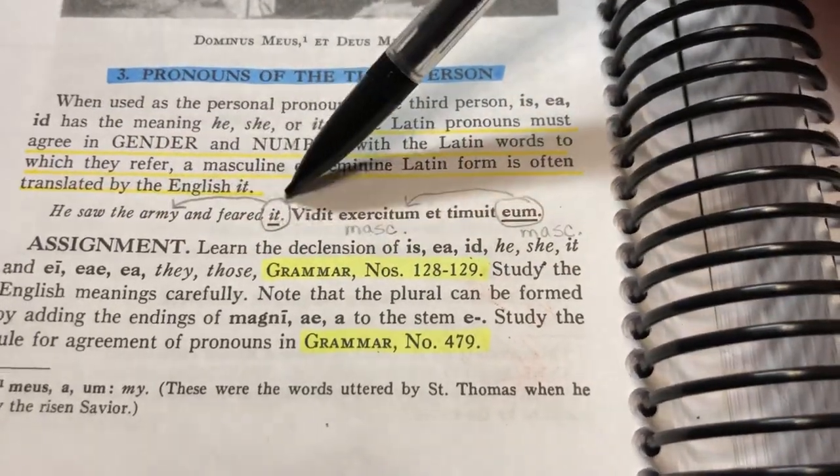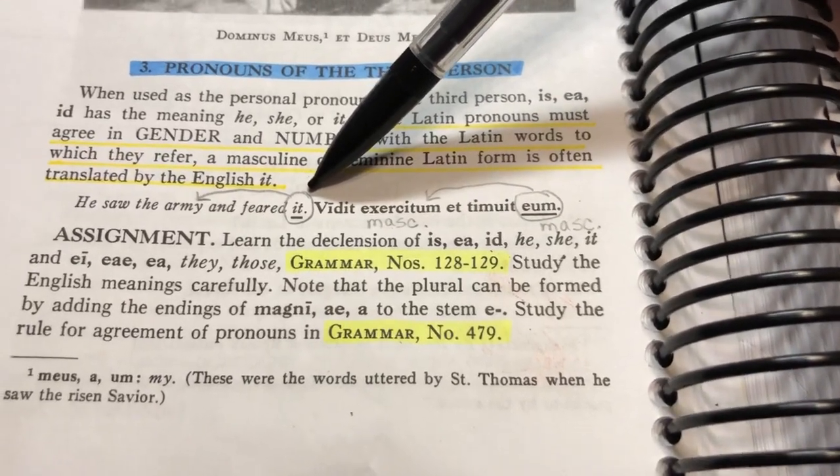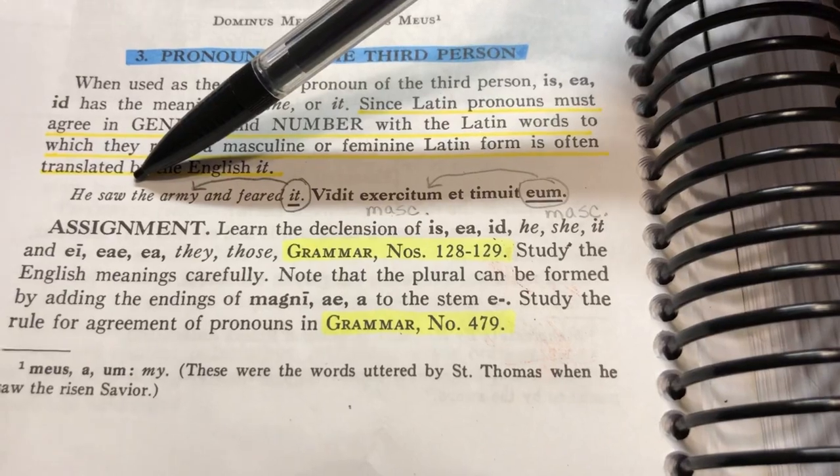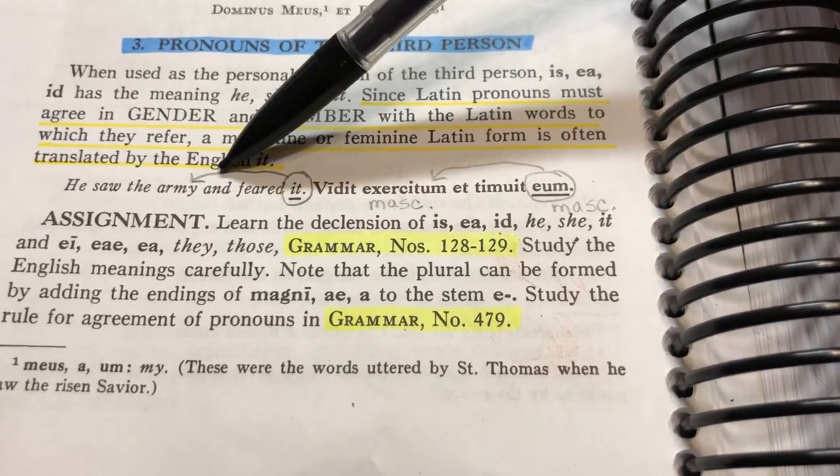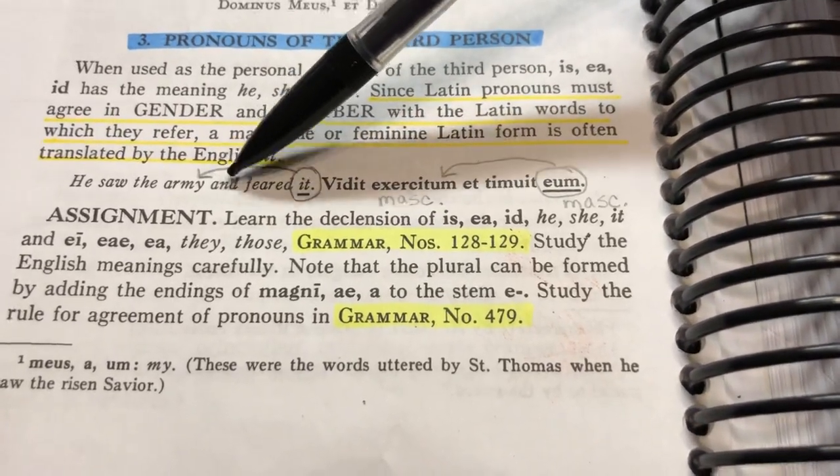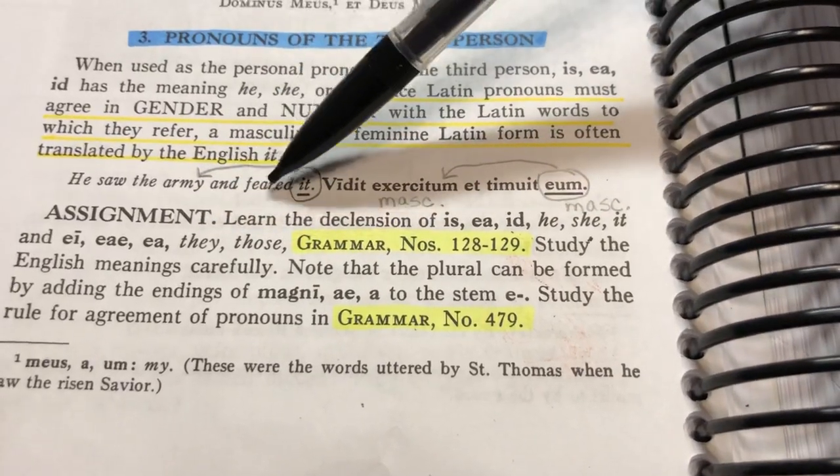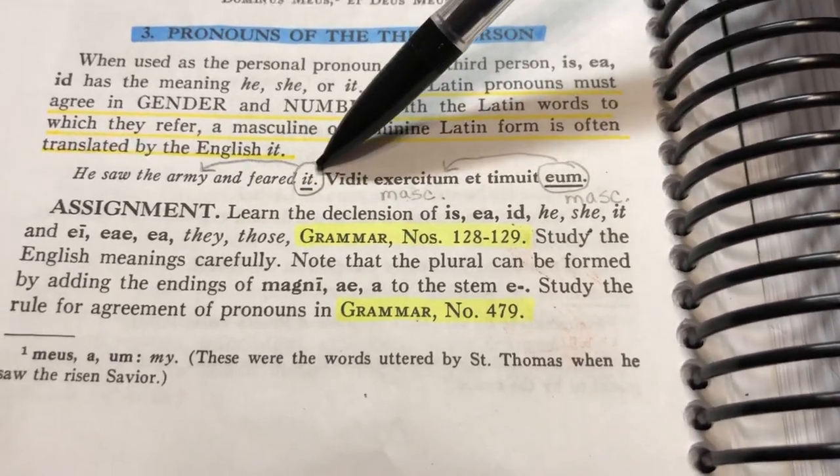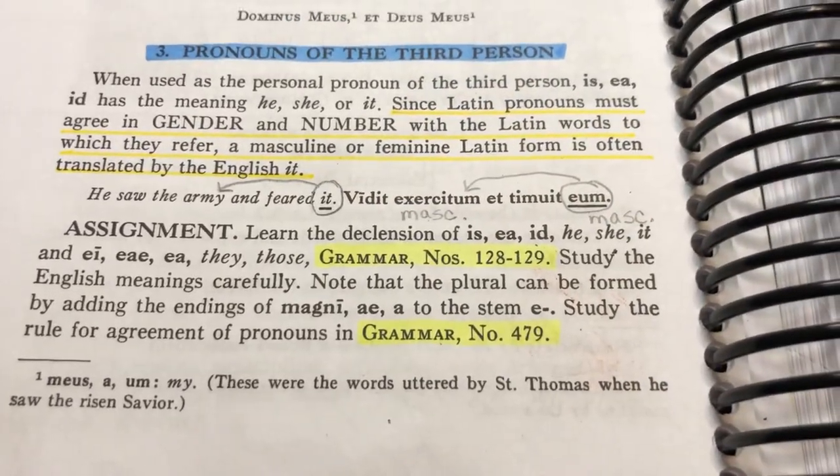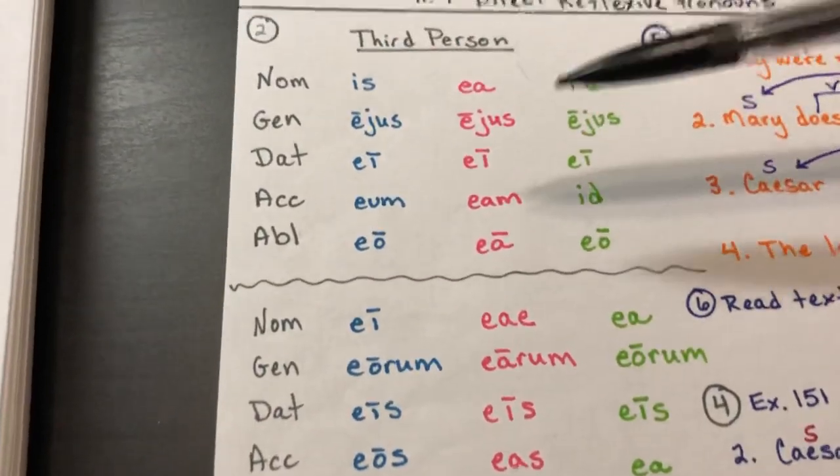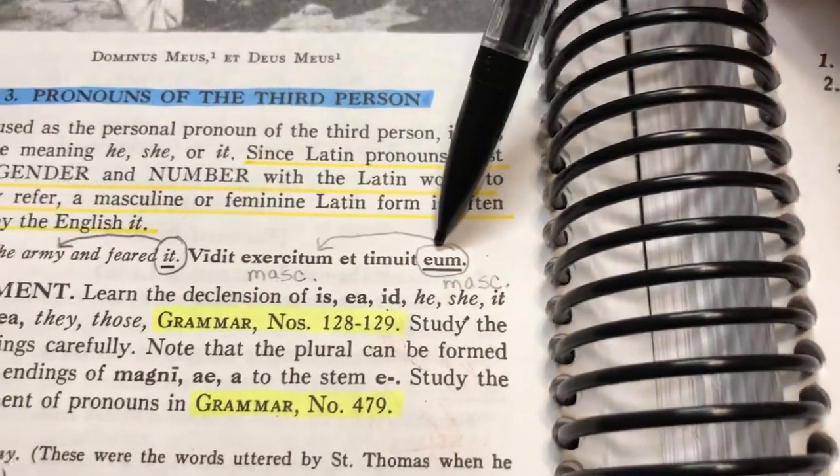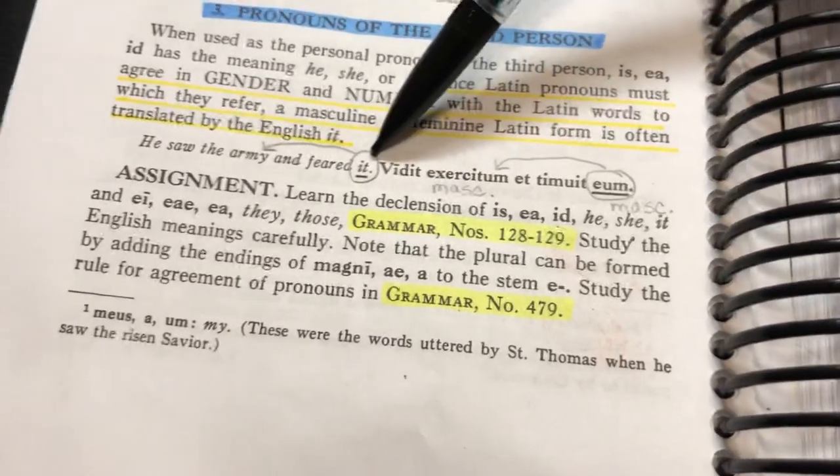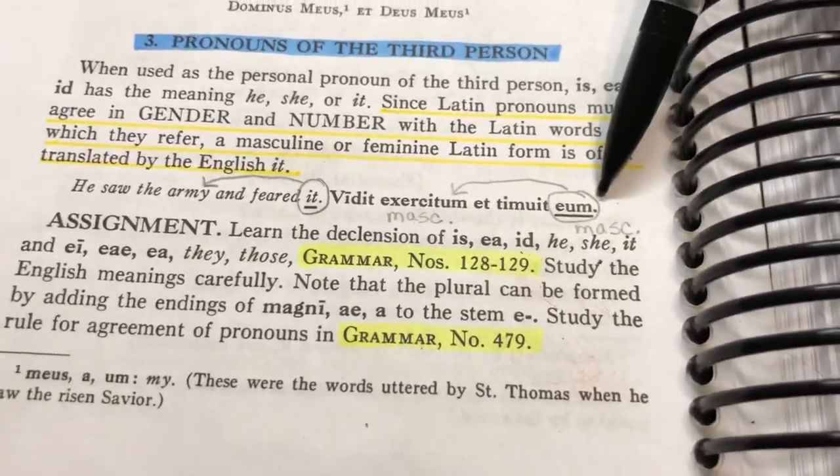It's in the direct object position. He saw the army and feared it. I think we did have this one on the board and we parsed it. We had our subject, our verb. He saw what? He saw the army, that's a D-O. There's a conjunction. Conjunctions always join two grammatically equal things. So it's joining the verb and D-O and another verb and D-O. It is in the direct object position, which puts it in the accusative. When I look at our chart and the accusative singular masculine, there's your E-M. In English, we might call it an it, but in masculine, it's going to look kind of like a him, even though it's not really a person.